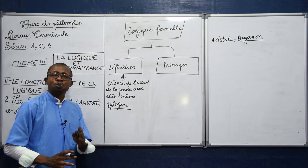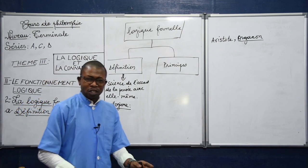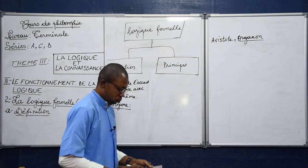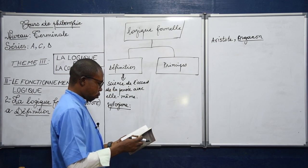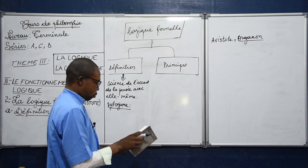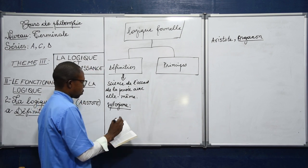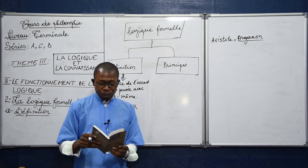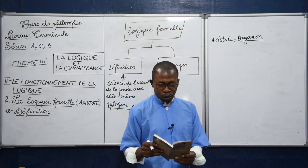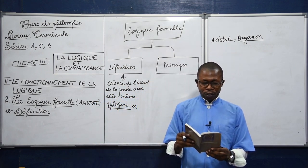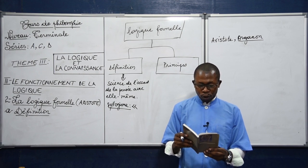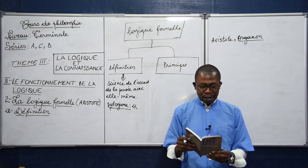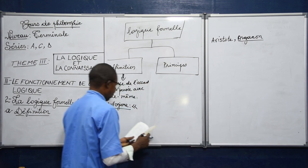Voici la réponse que nous propose Aristote dans son ouvrage intitulé Les Réfutations sophistiques : « Le syllogisme est un raisonnement dans lequel, certaines prémisses étant posées, une conclusion autre que ce qui a été posé en découlant nécessairement par le moyen des prémisses posées. »